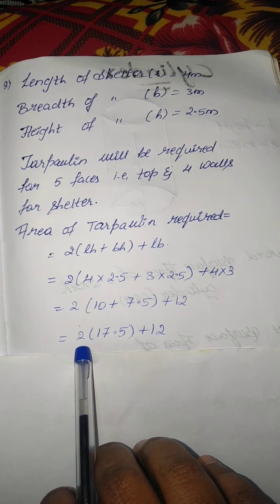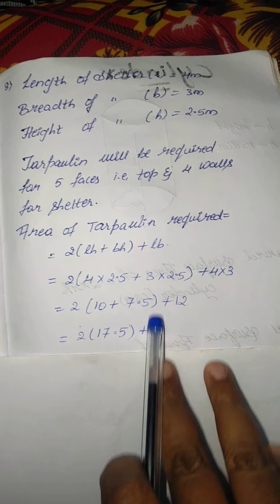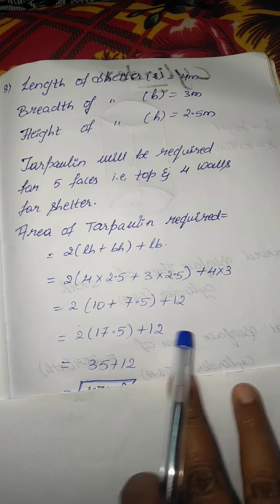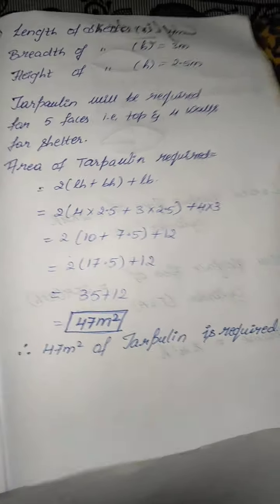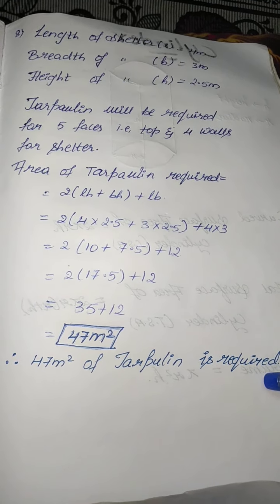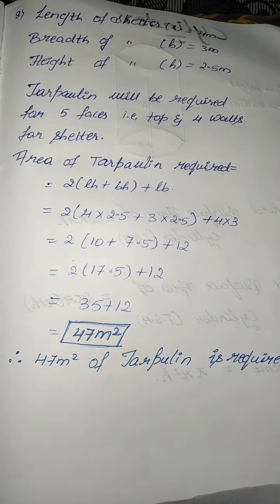Multiply with the 2 and plus 12, then 35 plus 12 - your final answer is 47 meter square. This is the total tarpaulin required for marking the car cover. Thank you, children.